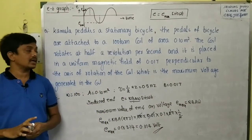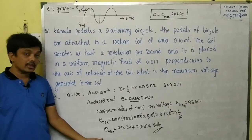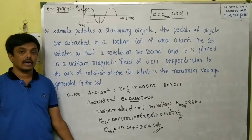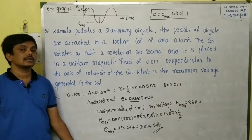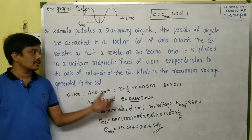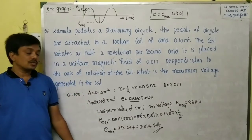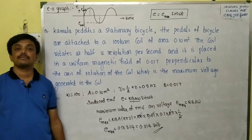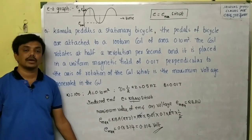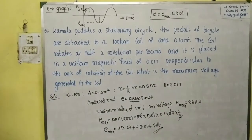If the coil has a resistance — say 20 ohms — and is connected across a resistor of 20 ohms, then we can also find the current generated. The current equals EMF divided by resistance: I = e_max / R. Thank you for watching. If you have any doubts, please comment and I will reply.